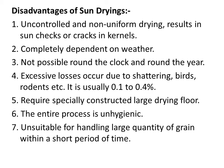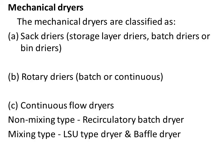Disadvantages of sun drying: uncontrolled and non-uniform drying results in sun shakes or cracks in kernels; it is completely dependent on weather conditions; not possible around the clock or year-round; excessive losses occur due to shattering, birds, and rodents; losses are usually 0.1 to 0.4 percent; it requires specially constructed large drying floors; the process is unhygienic as grain is kept in the open; and it is unsuitable for handling large quantities of grain within a short period of time.